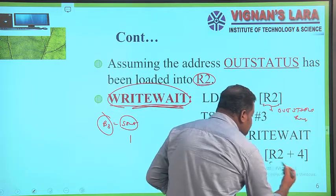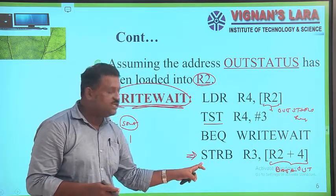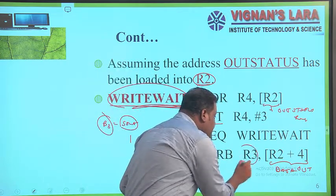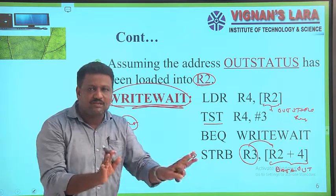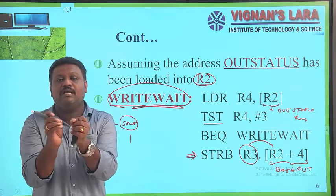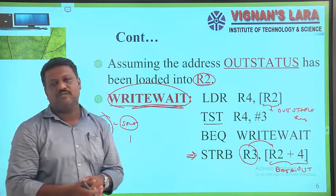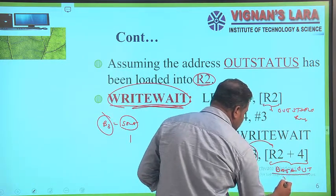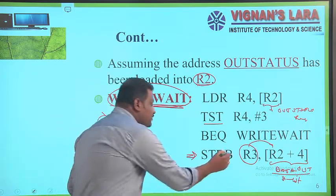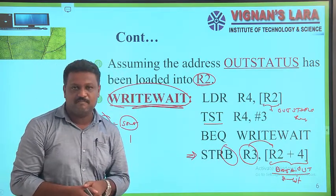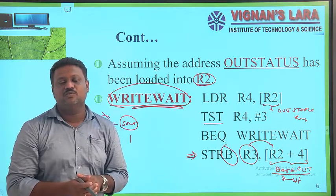STRB means store byte — it transfers a byte from R3 to the data-out register. R3 is a 32-bit register, but only the least significant 8 bits are transferred, because the data-out register is 8 bits wide. If the data-out register were 32 bits, we would use STR instead of STRB. With this simple routine, the processor transfers data to an output device.